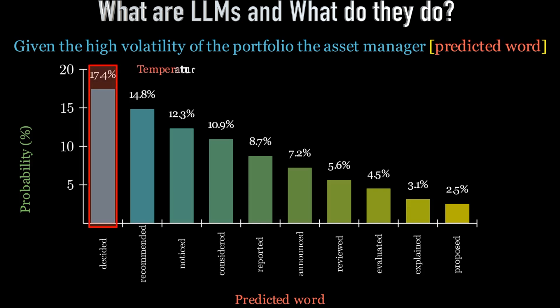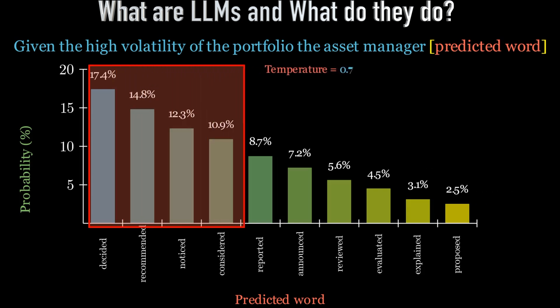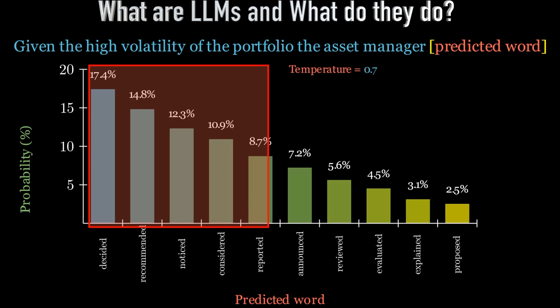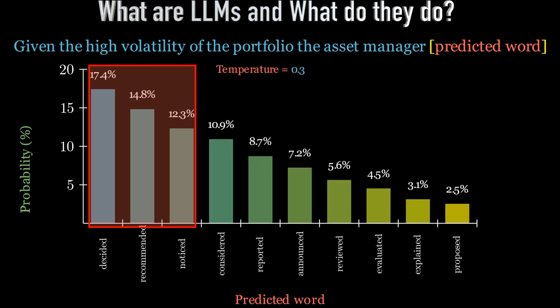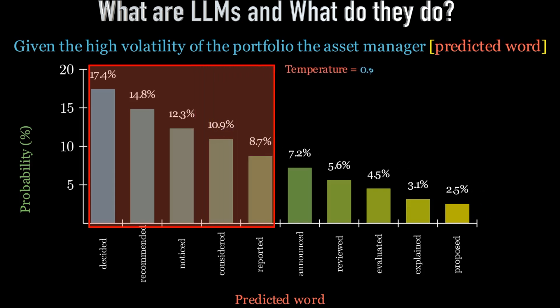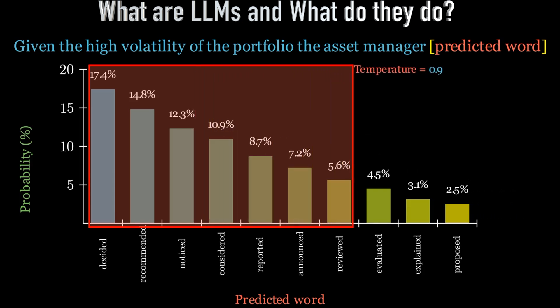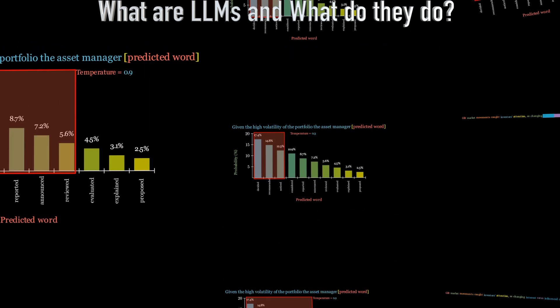Models come with a setting called temperature. If this is set to zero, then they will output the next most likely word. If this is any non-zero value, the model will sample a distribution of next most likely words and output one from a range of likely words. With higher temperature settings, the LLM output will be a weighted random drawing of a greater number of words, which will make the output more varied and interesting.